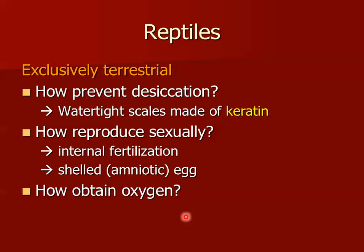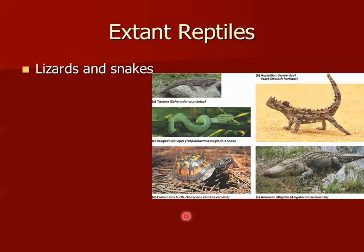How do reptiles obtain oxygen? If you're thinking they obtain oxygen by lungs, you would be absolutely correct. Reptiles have no gills — no longer in the picture. They have very well-developed lungs to obtain their oxygen. Existing or extant reptiles include lizards and snakes, turtles, and crocodiles and alligators. Collectively, these are called crocodilians.